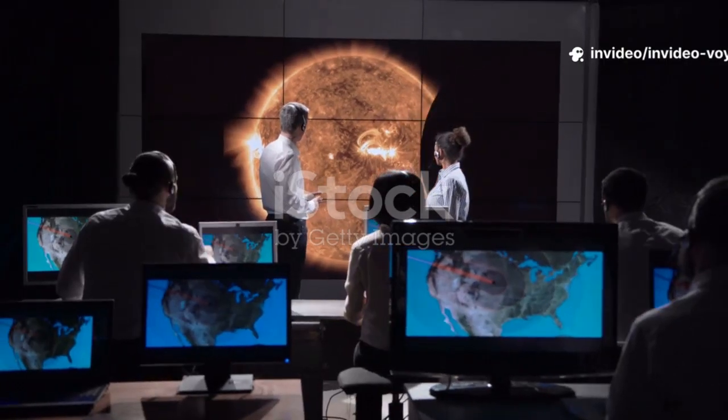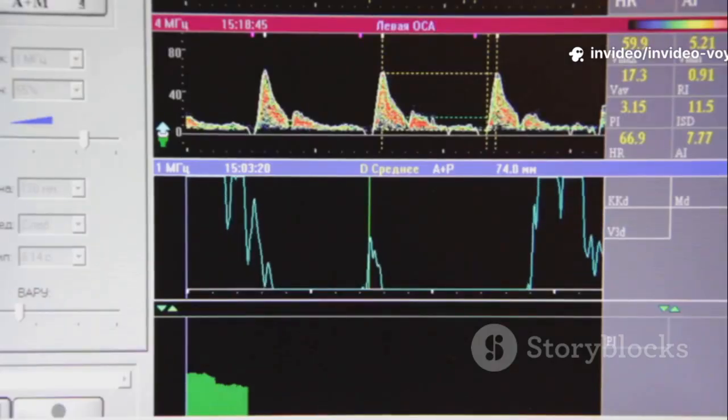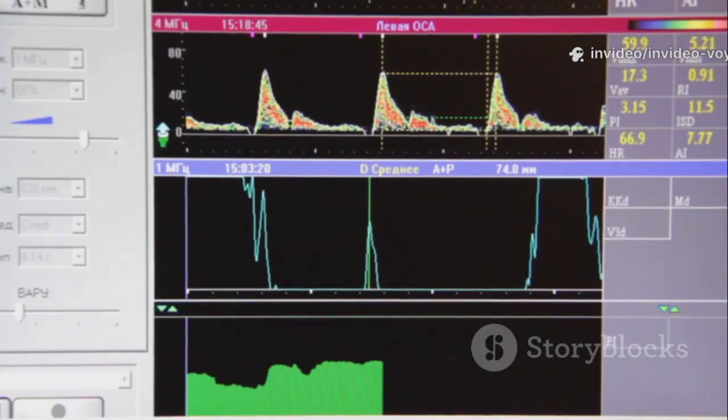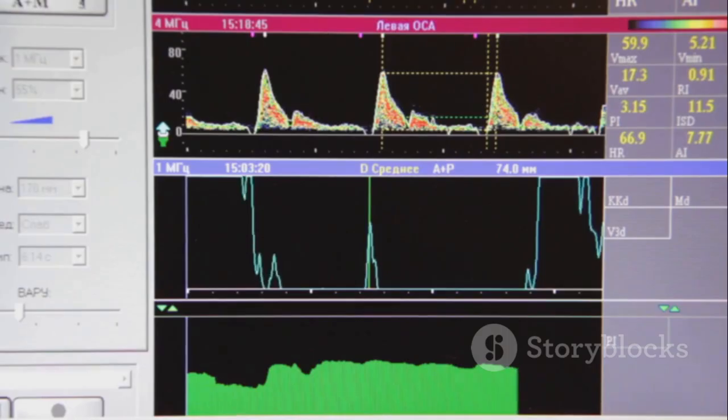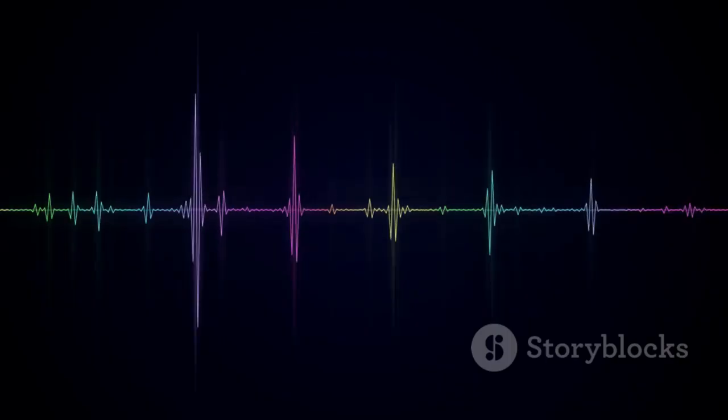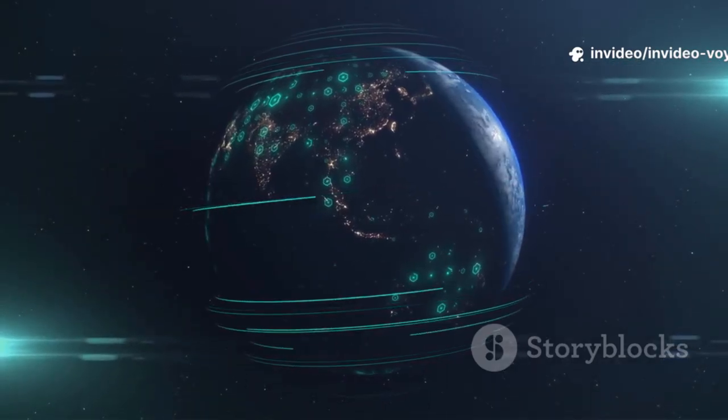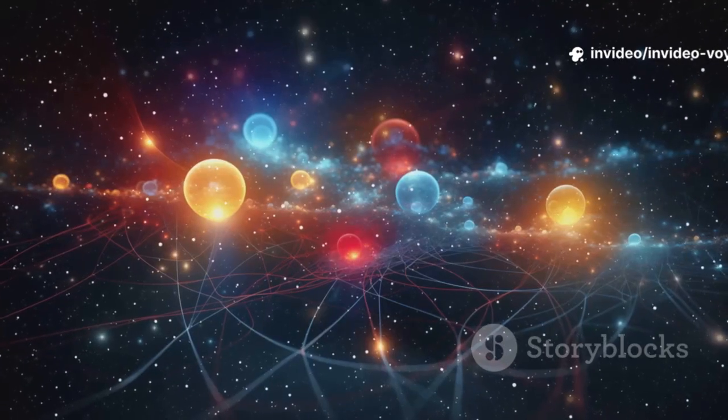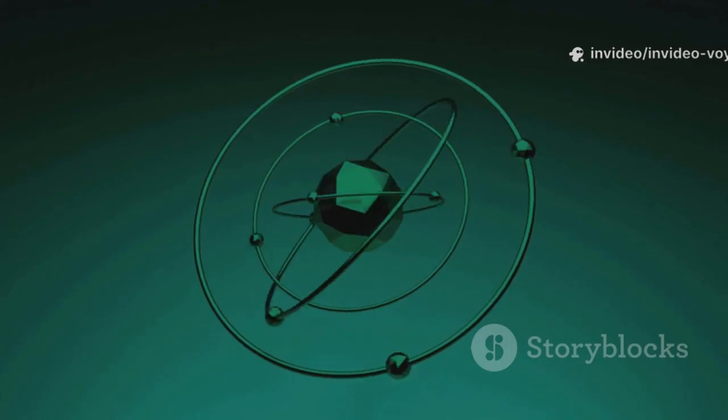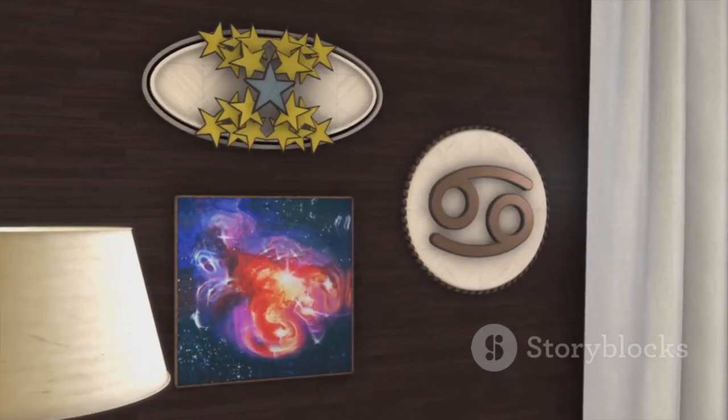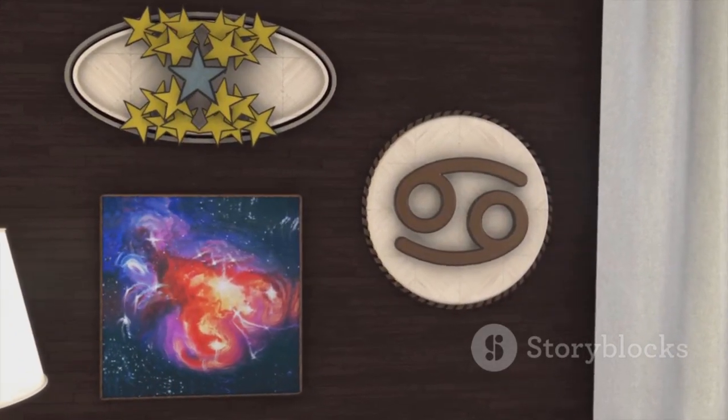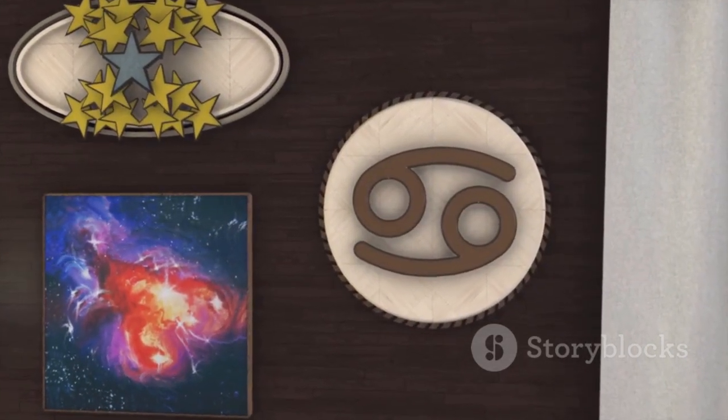The science team worked feverishly to decode this signal. They filtered out all the known natural sources of interference. They accounted for the spacecraft's own electronic noise. What was left was a clear, unambiguous pattern. It was a complex sequence of mathematical information. The speed of light. The Planck constant. The charge of an electron. It was like a cosmic calling card. A message that said, we understand the universe just like you do.